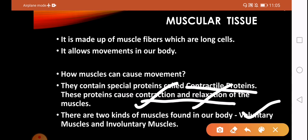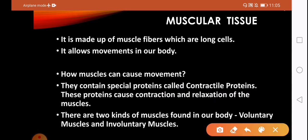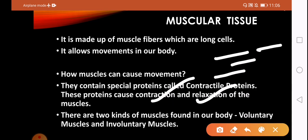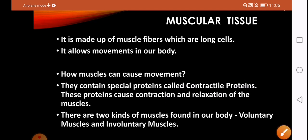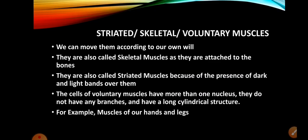Because of contractile proteins, voluntary and involuntary muscles are formed in our body. Voluntary muscles work according to our will, and involuntary muscles do not work according to our will. Muscles move by contraction and relaxation — they slide over each other by contracting or relaxing, and this sliding movement helps in the movement of the body.